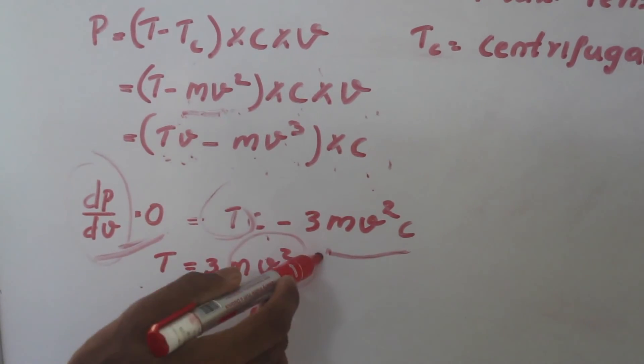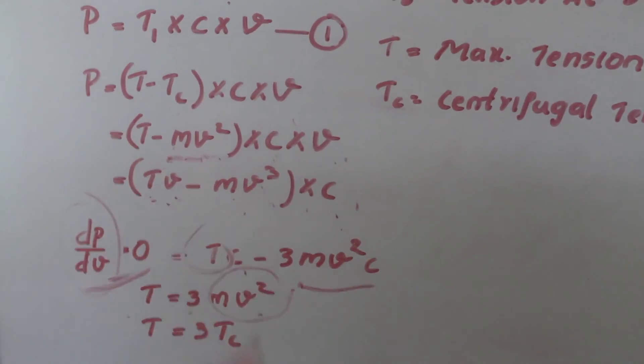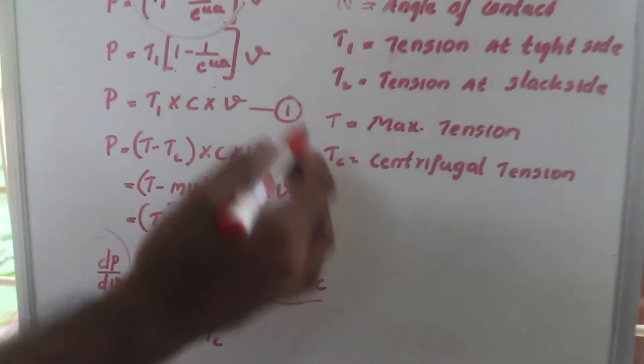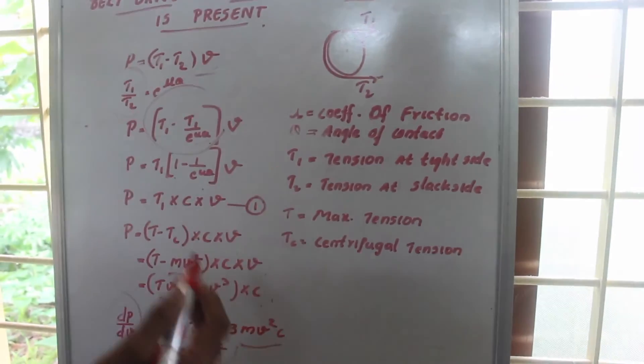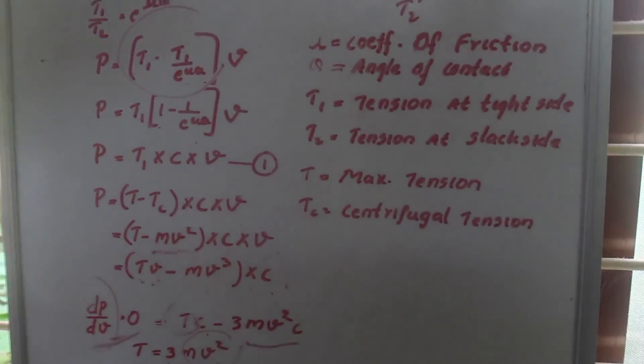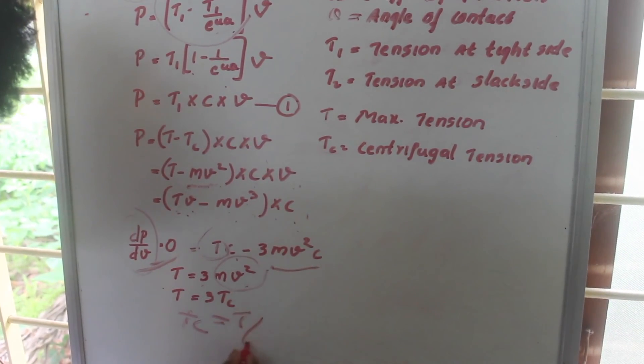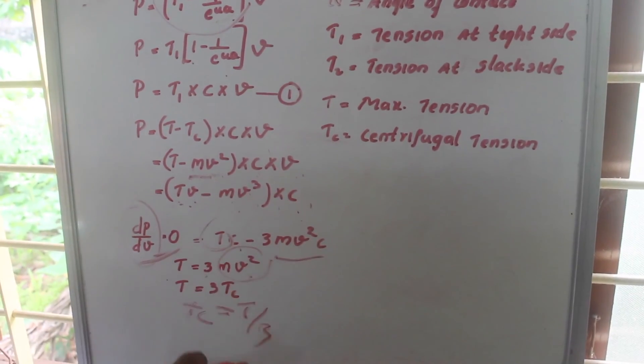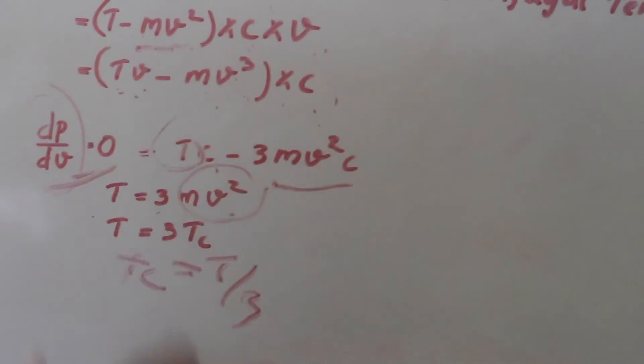We already showed that m v squared is equal to Tc. So for maximum power transmission, the maximum tension is always 3 times the centrifugal tension. We can say that Tc is equal to T by 3, or one-third of the total tension. The centrifugal tension is one-third of total tension.